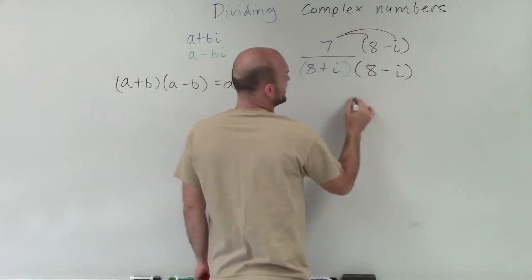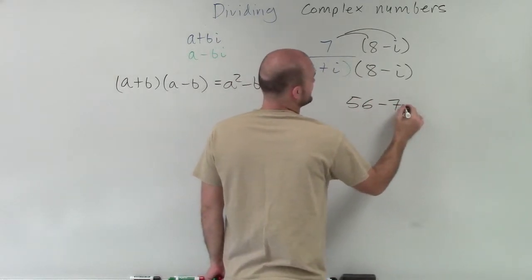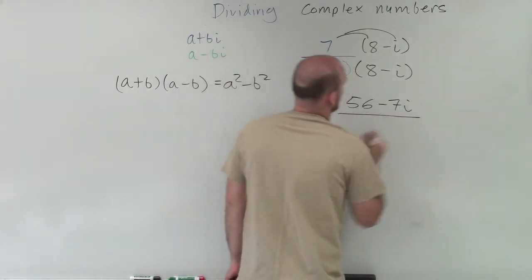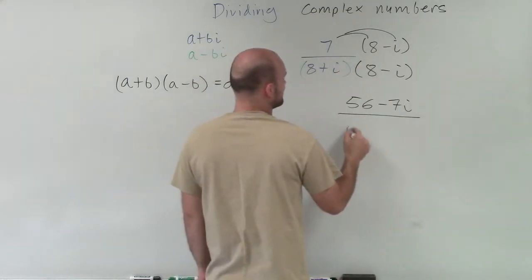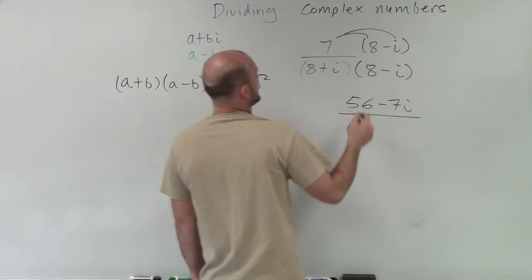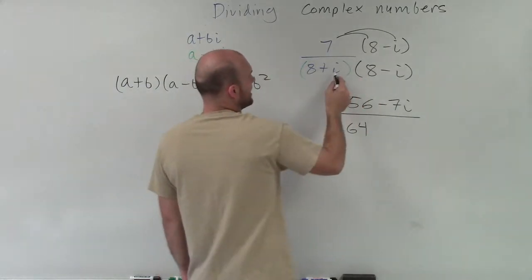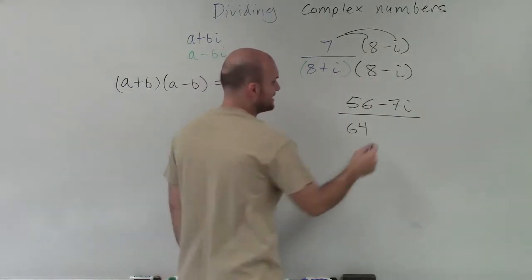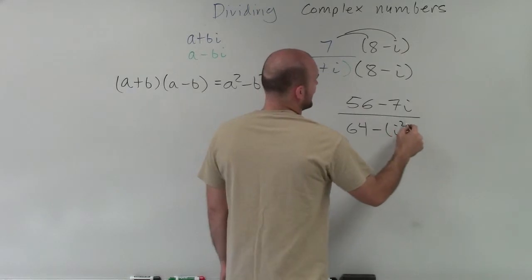All right. So I distribute that through. I get 56 minus 7i all over. Here, I'm just going to have 64 and then i. So 8 times 8 is 8 squared. i times negative i is going to be a negative i squared.